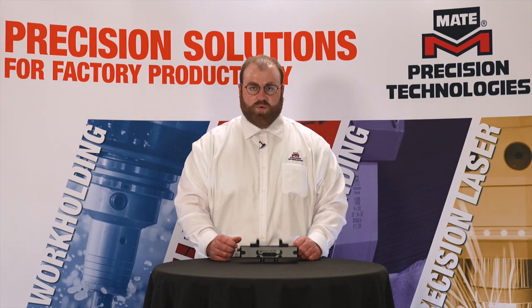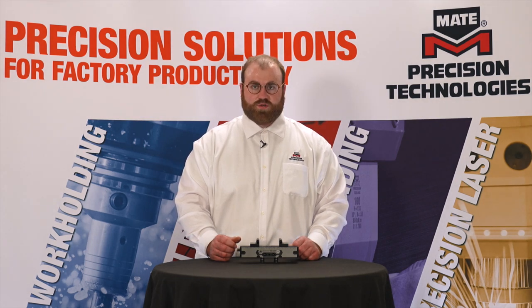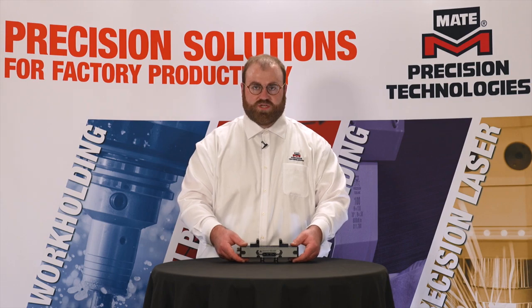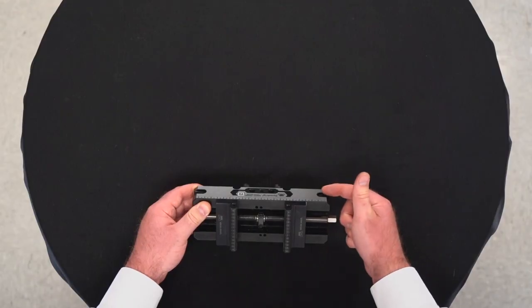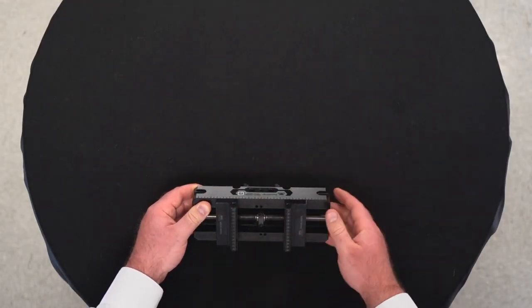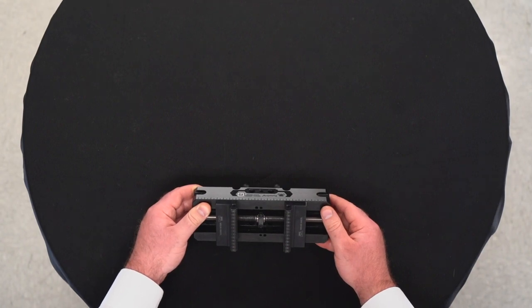All vices come with features to allow toe clamps to be utilized to mount directly to your machine tool table. Toe clamps will connect to these locations to secure your vise to your machine tool table.